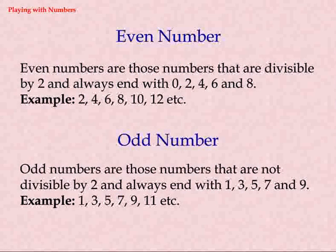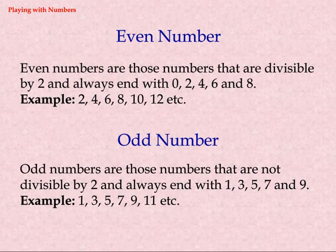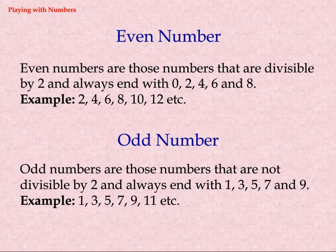Even numbers are those numbers that are divisible by 2 and always end with 0, 2, 4, 6, or 8. Examples: 2, 4, 6, 8, 10, 12, etc.